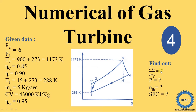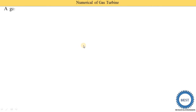We need to find some additional data compared to the last three numericals. The first additional parameter is mass of air divided by mass of fuel, and the SFC means specific fuel consumption. These are the extra quantities we find in these numericals. First, let's understand the problem statement.